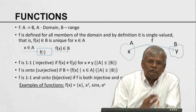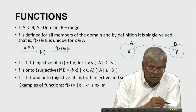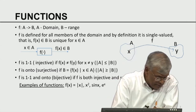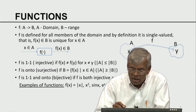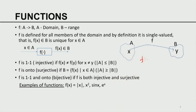So let us start from fundamentals. We are going to start with the notion of functions. To be able to define a function, we need different objects. One is a set A, another is a set B. F is a function from set A to set B. We call A the domain of the function and B the range of the function. A function is simply an association of points of the domain with the points in the range.